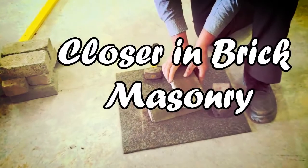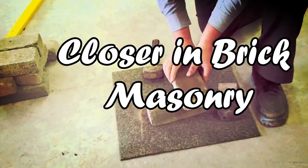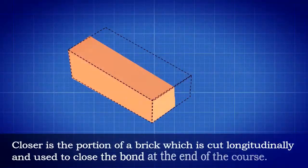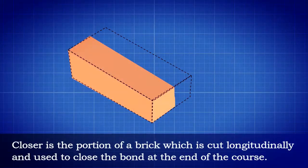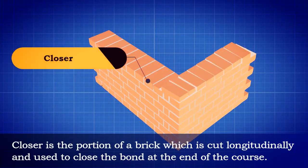Closer in Brick Masonry. This video explains what is closer in brick masonry and its types. Closer is the portion of a brick which is cut longitudinally and used to close the bond at the end of the course.